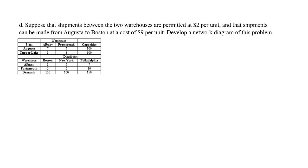Now the more serious, harder part. Suppose that shipments between the two warehouses are permitted at $2 per unit and that shipments can be made from Augusta to Boston at a cost of $9 per unit. Develop a network diagram of this problem. We don't have the original network diagram so we'll have to draw everything and then add these two extra information.